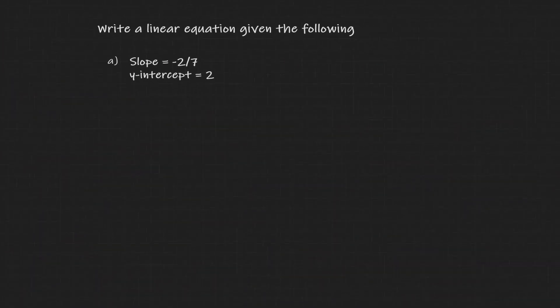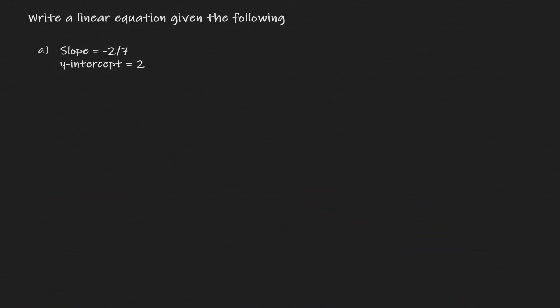Now let's put this into practice with some examples. Our objective is to create an equation for a line. Notice what we have: the value of the slope and the value of the y-intercept. So we can use the slope-intercept form, which is defined as y equals mx plus b. We need the slope, which we have as negative two-sevenths, and the y-intercept, which we have as two. So we just plug in those values.